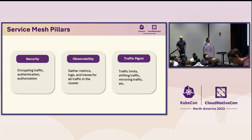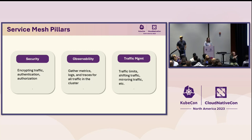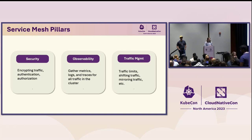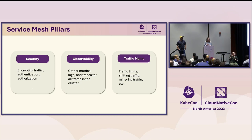There are three pillars of service mesh. Security can include encryption protocols, authentication, authorization — things like who can access what and which services can talk to each other. Observability lets you gain insights into how traffic is flowing. And traffic management is about actually controlling the traffic — options like traffic limits, shifting traffic, mirroring traffic, and things like that. We'll dive deeper into features in all these areas in a bit.